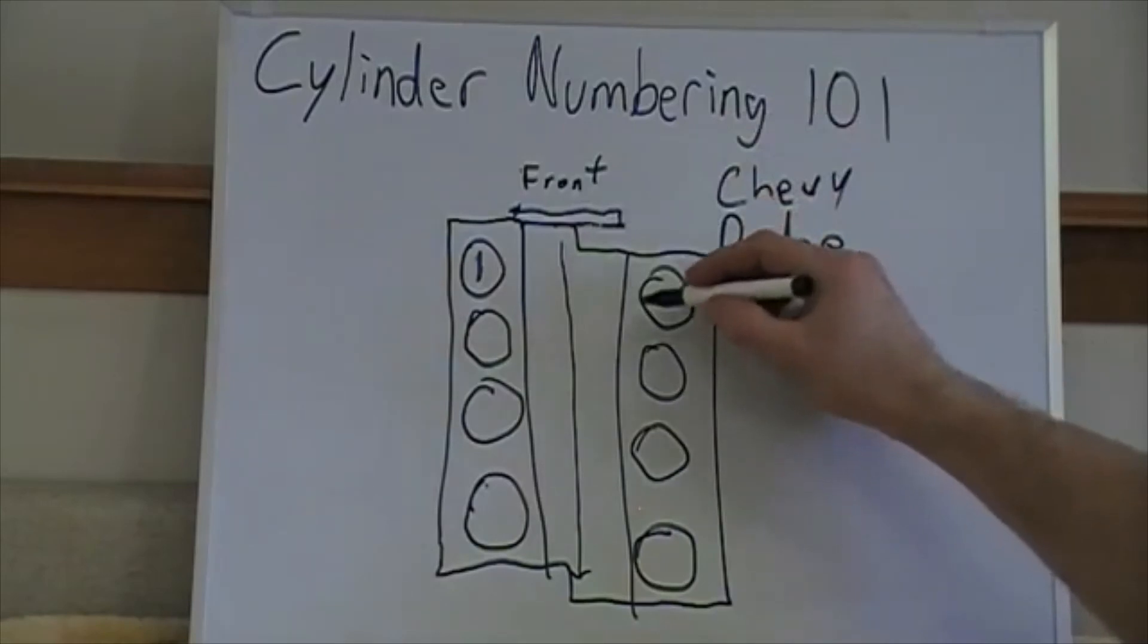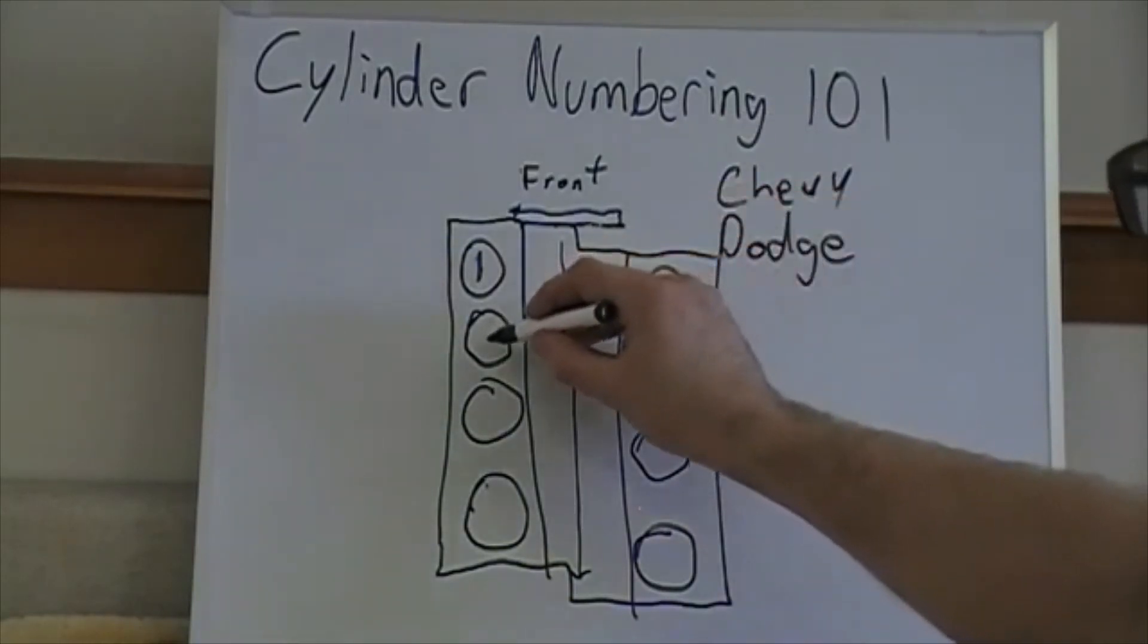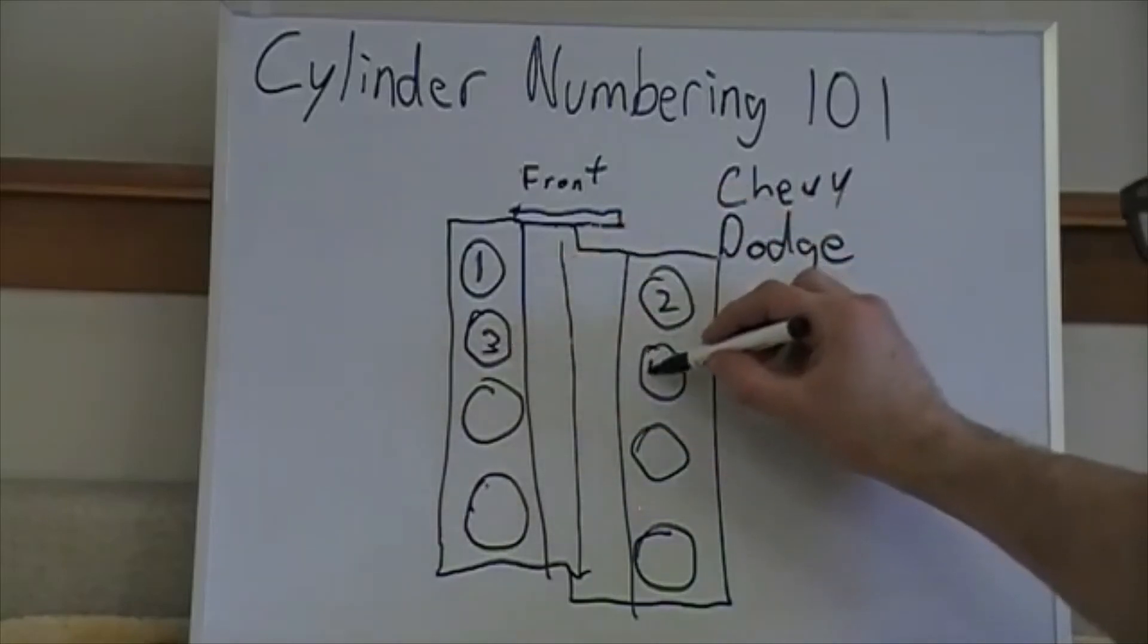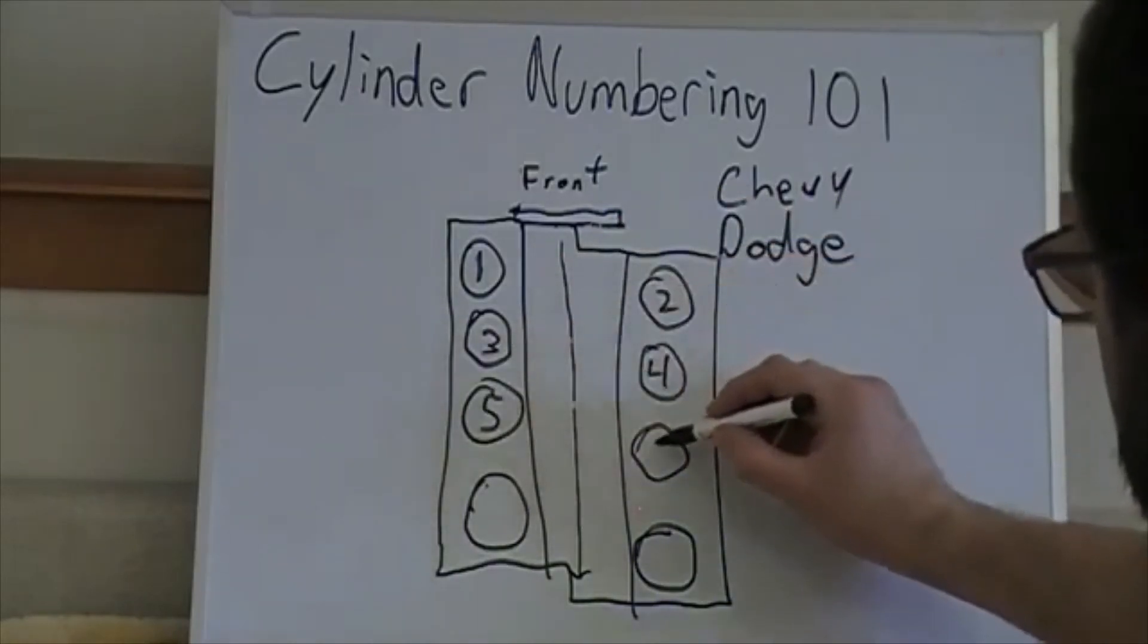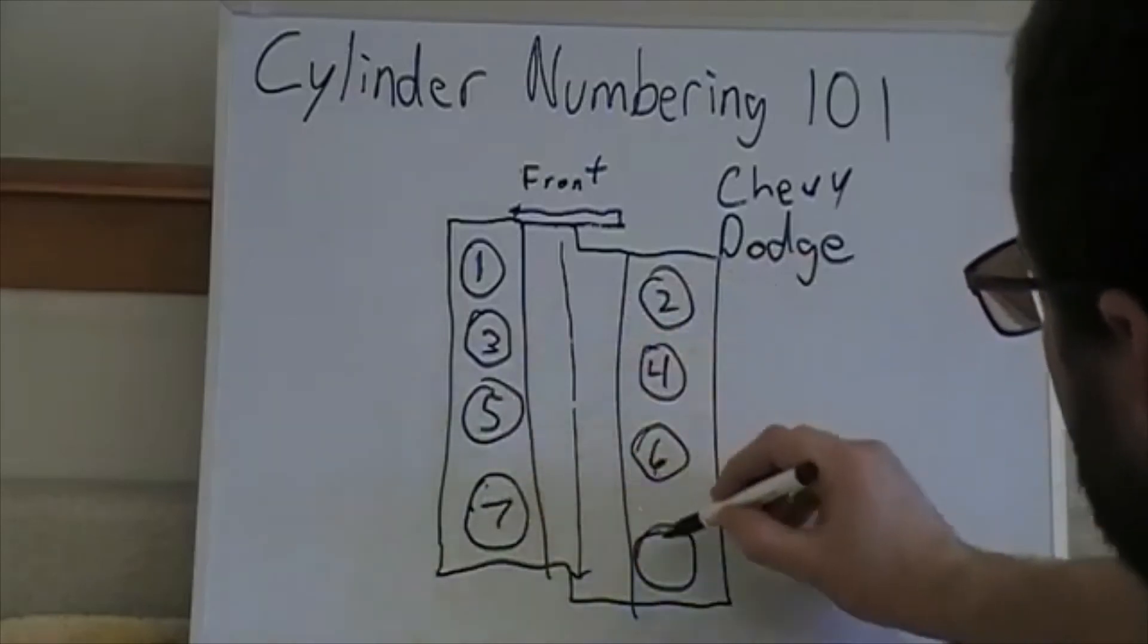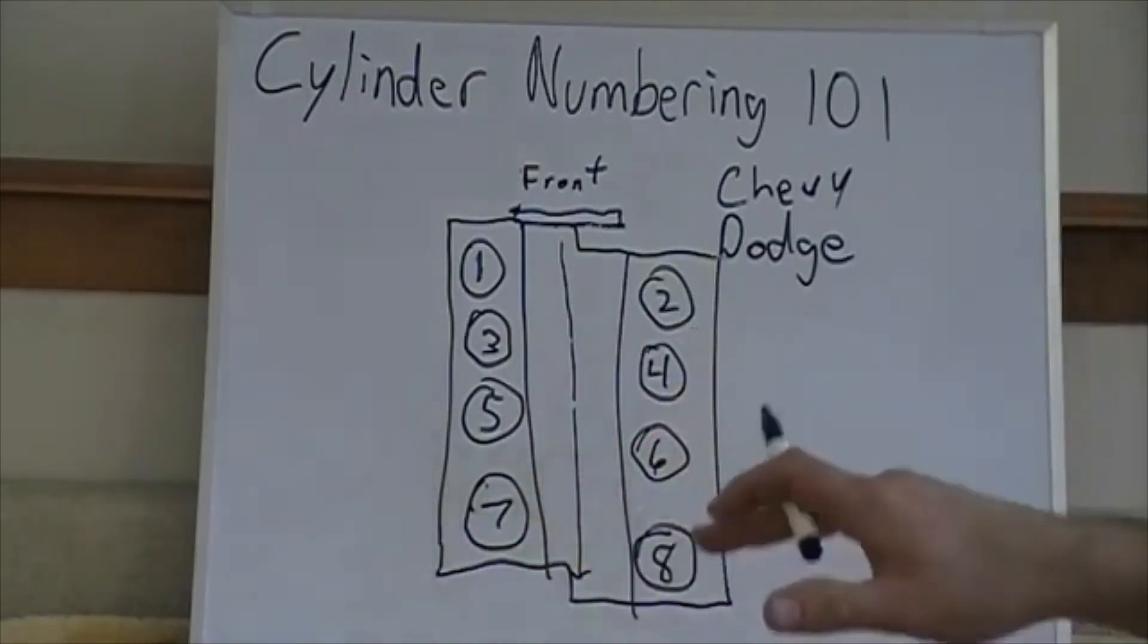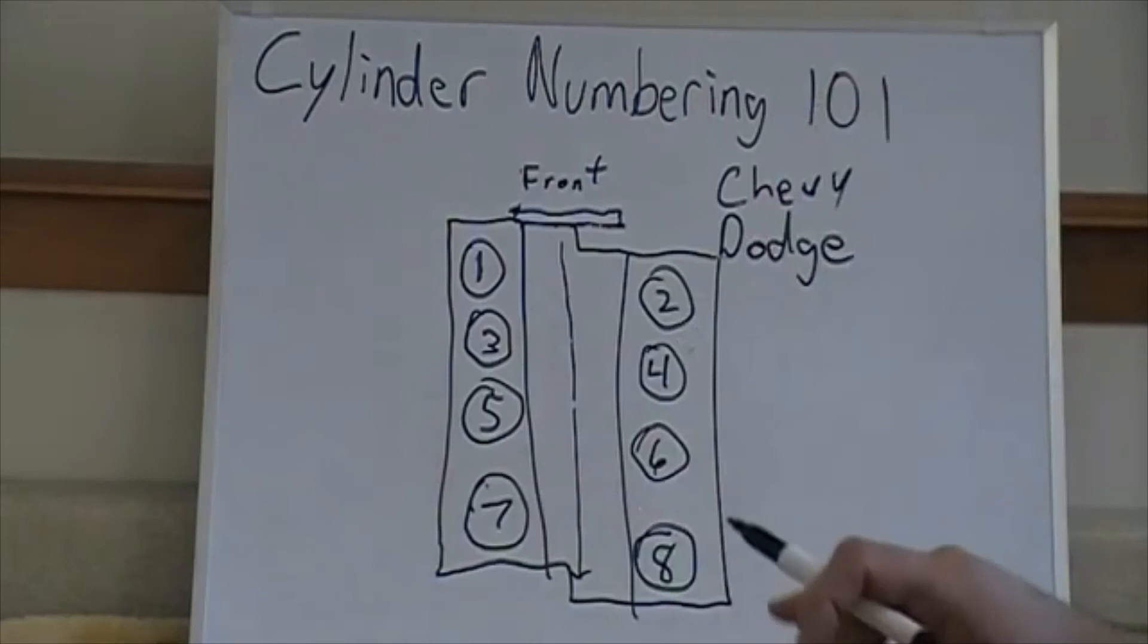The next cylinder in line on the crankshaft would be over here, it's two. Next is three, four, five, six, seven, eight. And that's how most of your other engines are numbered.